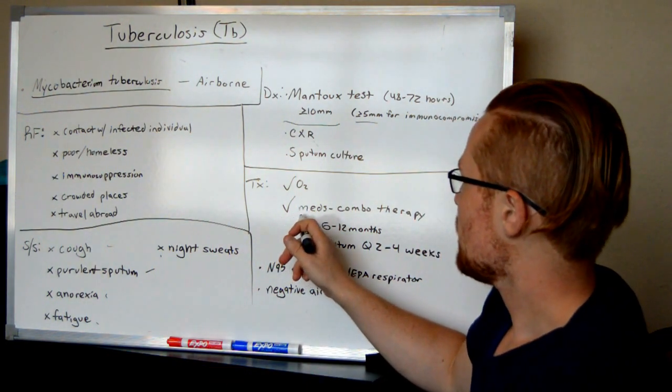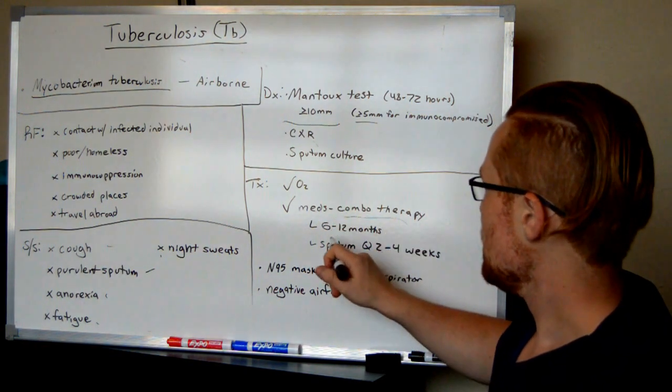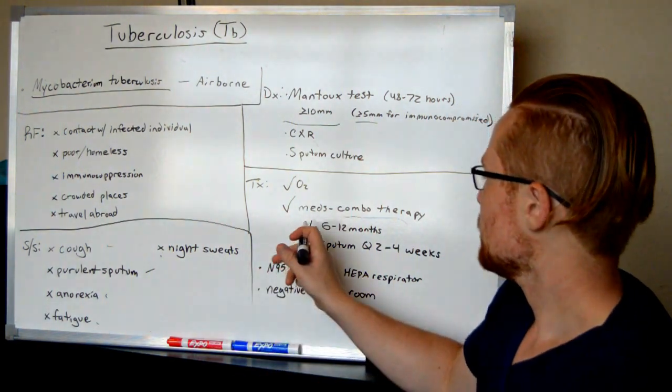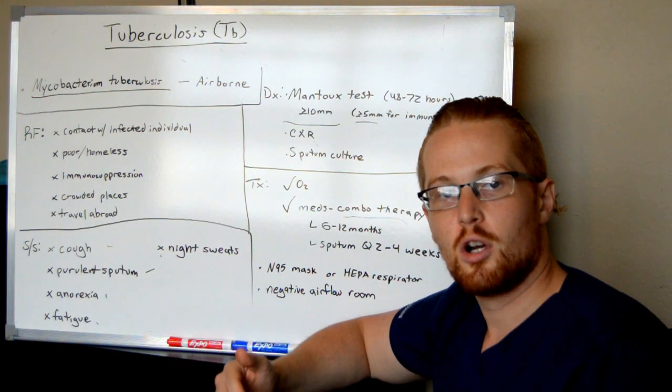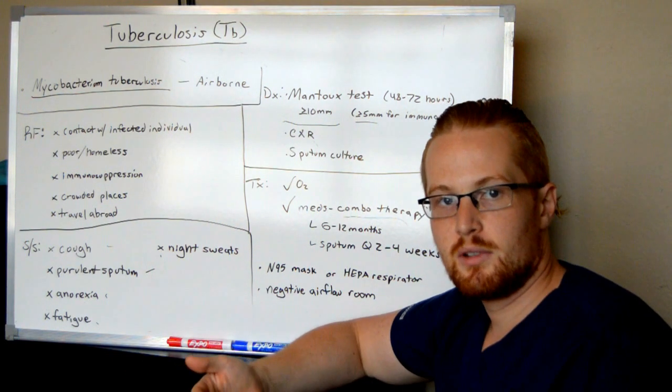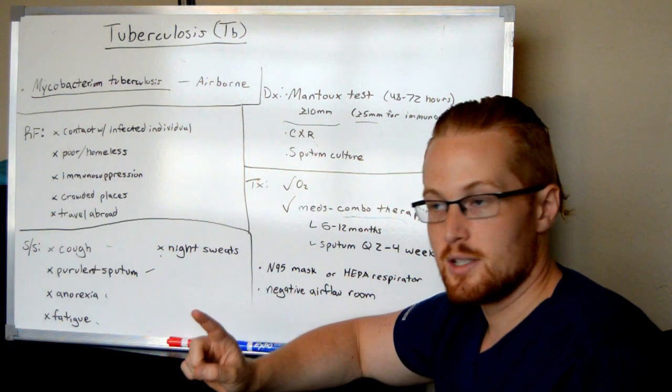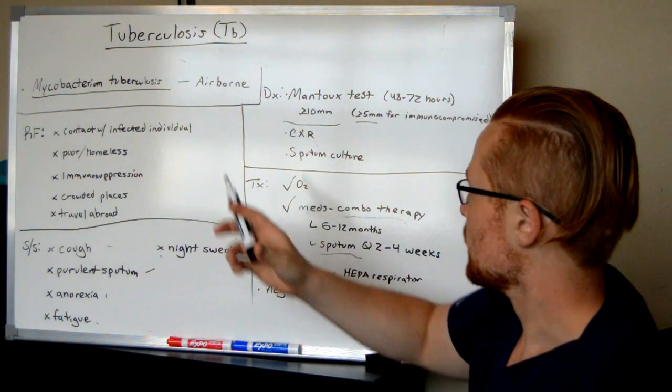And then you're going to start them on the medicines to fight tuberculosis and this is typically combination therapy, so multiple different types of pills at the same time and it's going to be over 6 to 12 months. They're not going to be at the hospital for that long so they'll go home and they're going to be receiving this therapy and they're going to be contagious until you get three sputum samples that come back negative for tuberculosis.